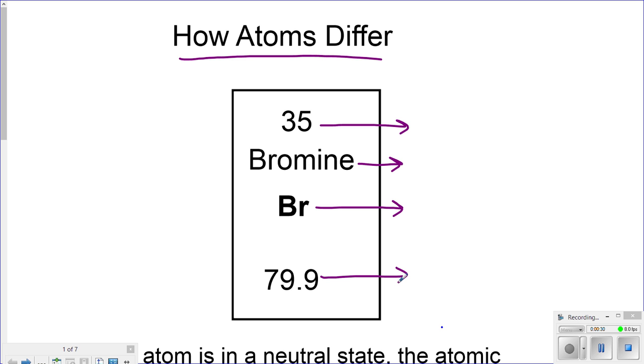Well, the first number on top gives you the famous atomic number. This atomic number, when the element is in the neutral state, it also represents the number of protons, which is positive charge.